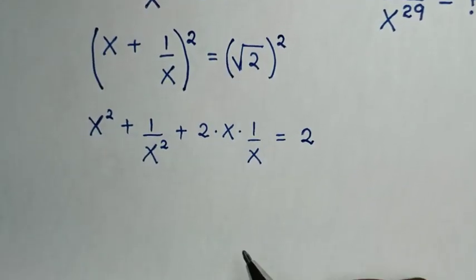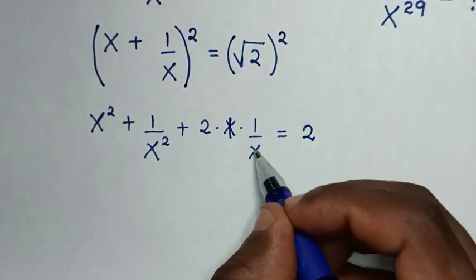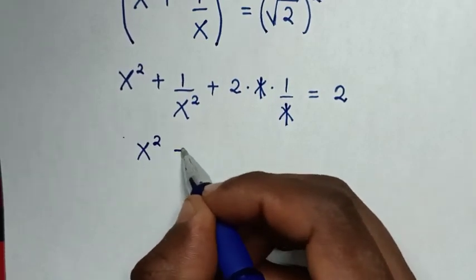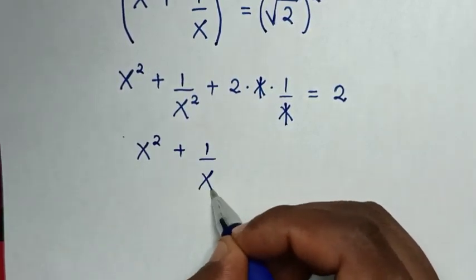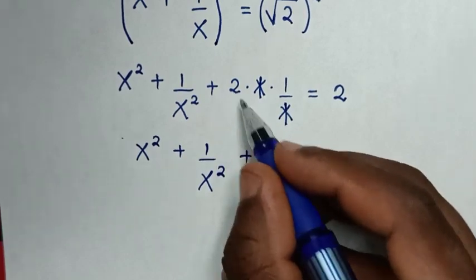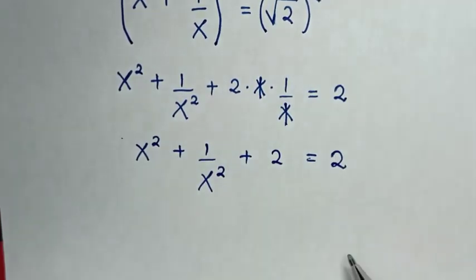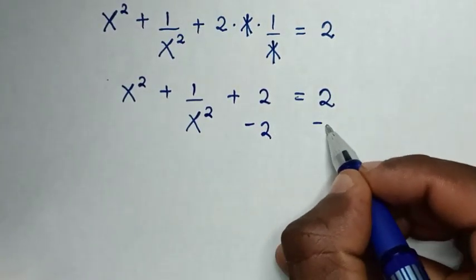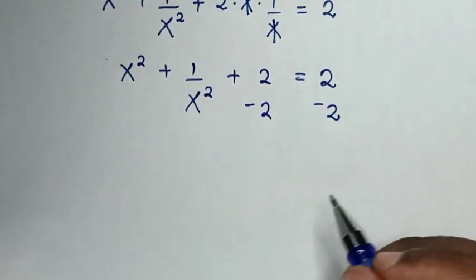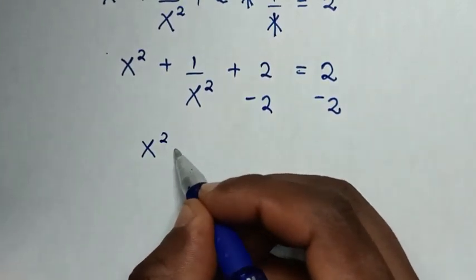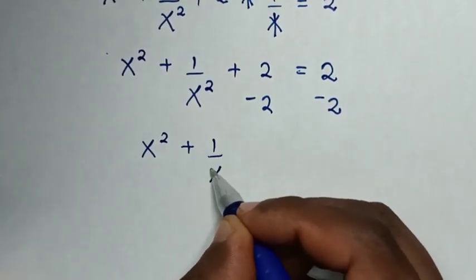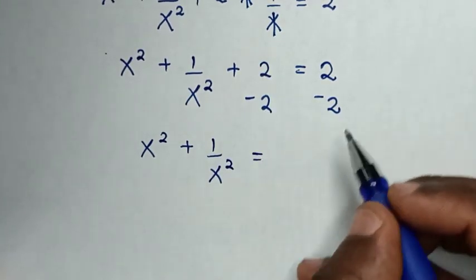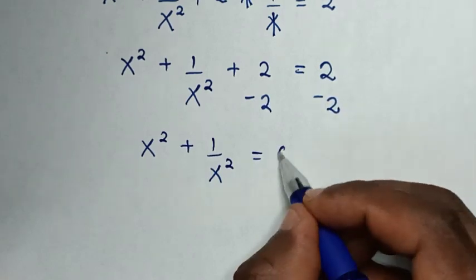Then in the next step, we simplify. This x will cancel this x. Then it will be x squared plus 1 over x squared plus 2 is equal to 2. Then in the next step, we subtract 2 from both sides. So it will be x squared plus 1 over x squared equals 2 minus 2, which is 0.